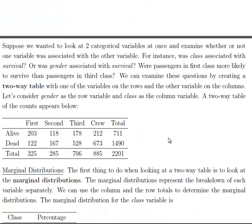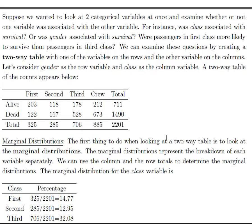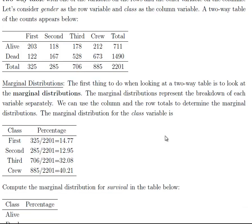Now we're going to talk about two-way tables. Two-way tables are used to summarize two categorical variables at a time, and once we do that we can see if there's an association — for example, were people more likely to survive if they were in first class versus crew. We do that by looking at distributions of the variables. Here's a two-way table of the variable survival — whether someone lived or died — and their class.